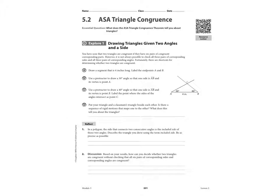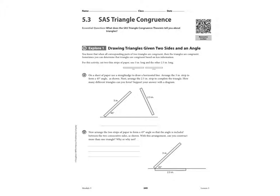Okay, so 5.2 is angle, side, angle. And it mentions here in Explore 1 that you have seen that two triangles are congruent if they have six pairs of corresponding parts. But sometimes it's not always easy to check all those. And so in this section, we are just going to check an angle, a side, and an angle. So that was all there was to angle, side, angle.